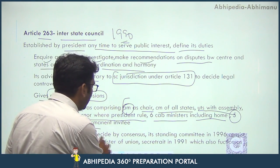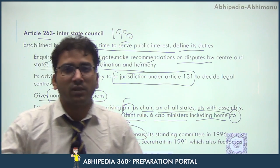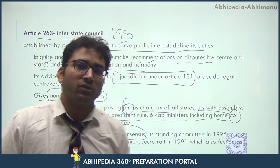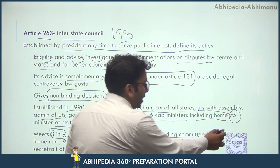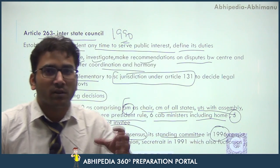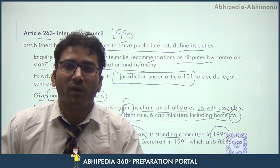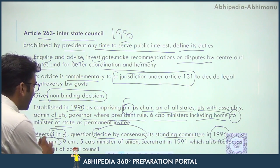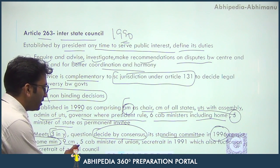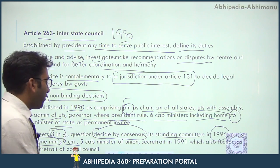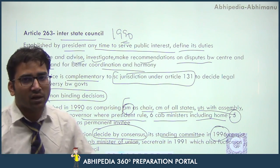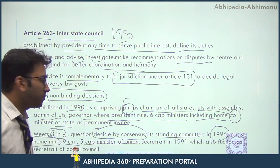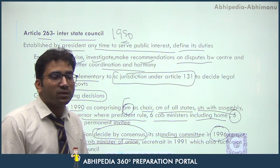Questions of the Interstate Council are decided by consensus, meaning the center and state governments coordinate and cooperate in their decisions. Its Standing Committee was established in 1996 to handle work that cannot be managed due to the high volume of matters. The chairman of the Standing Committee is the Home Minister, along with nine Chief Ministers and five cabinet ministers of the union.